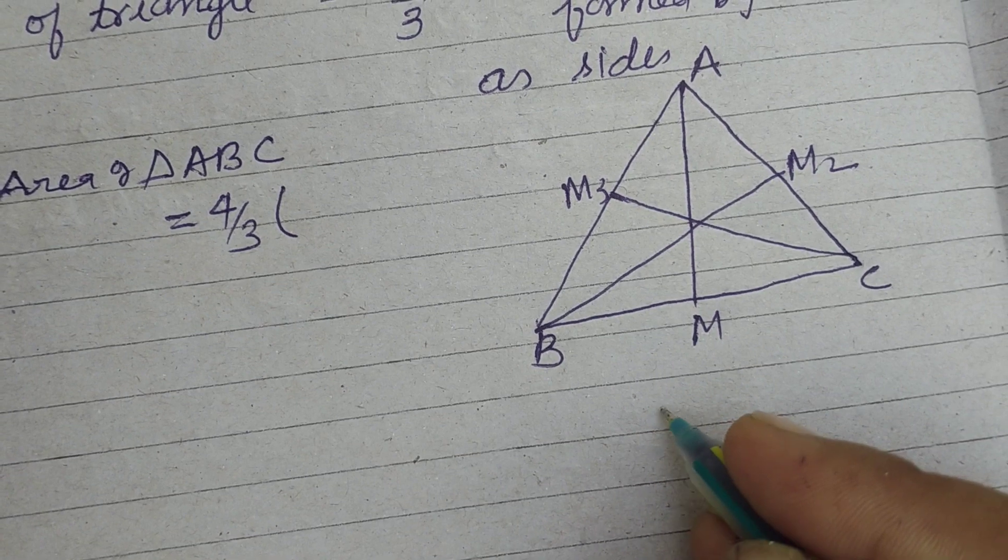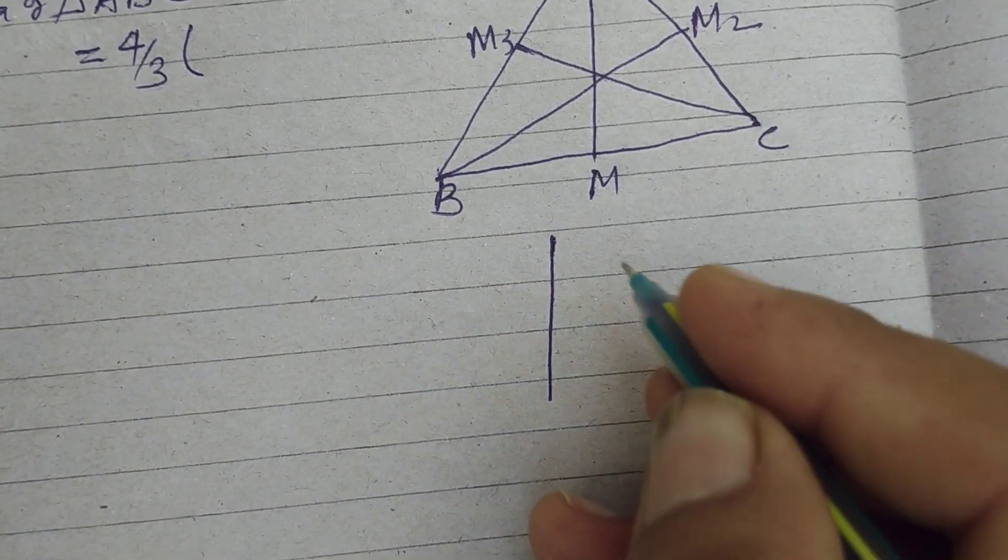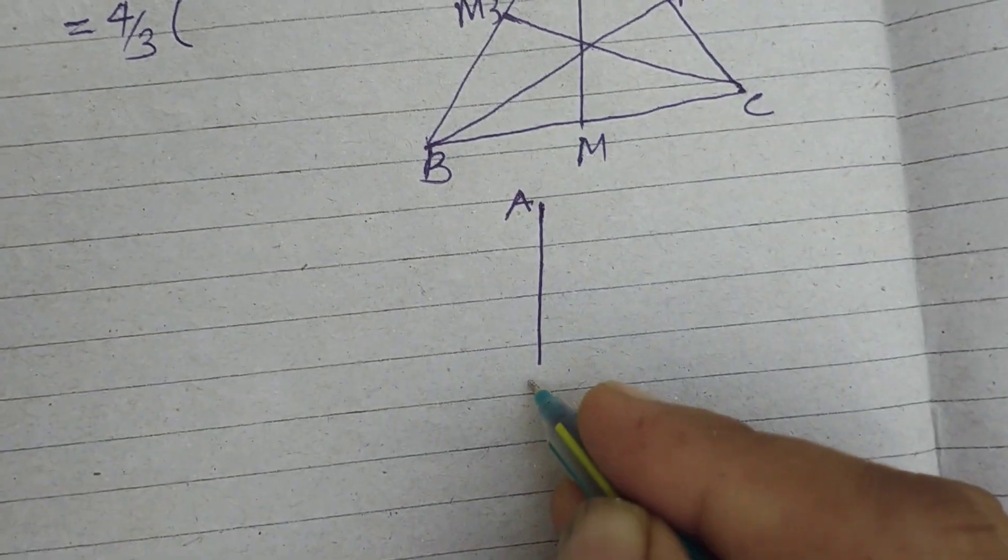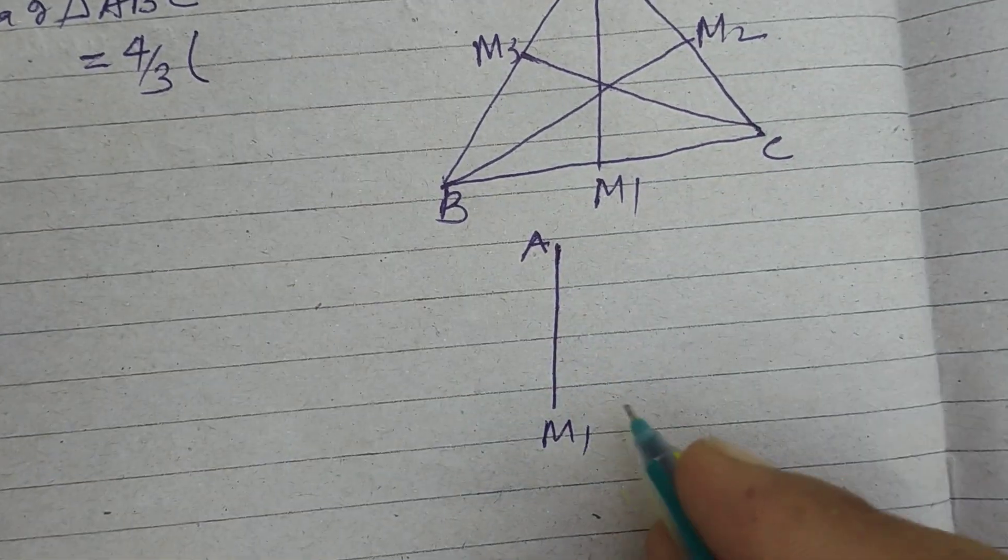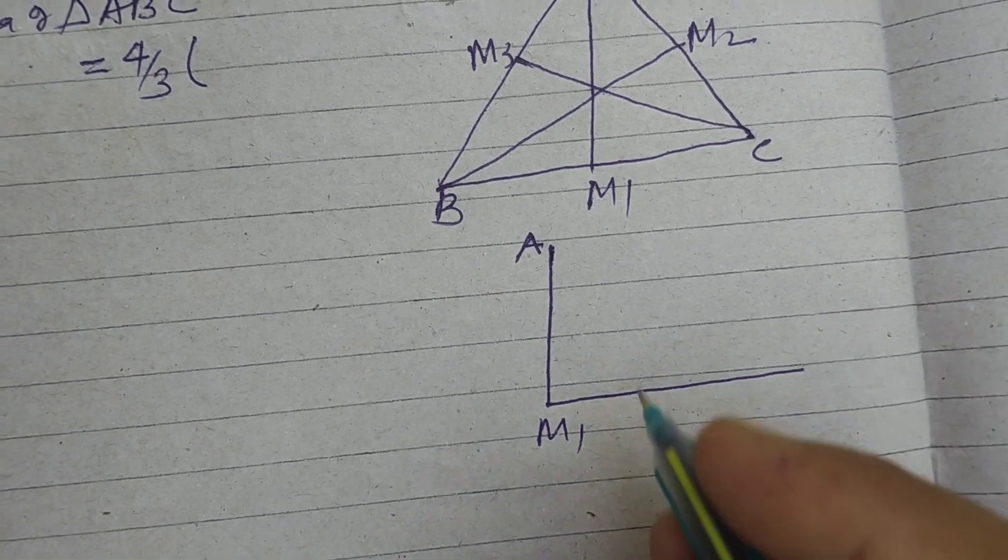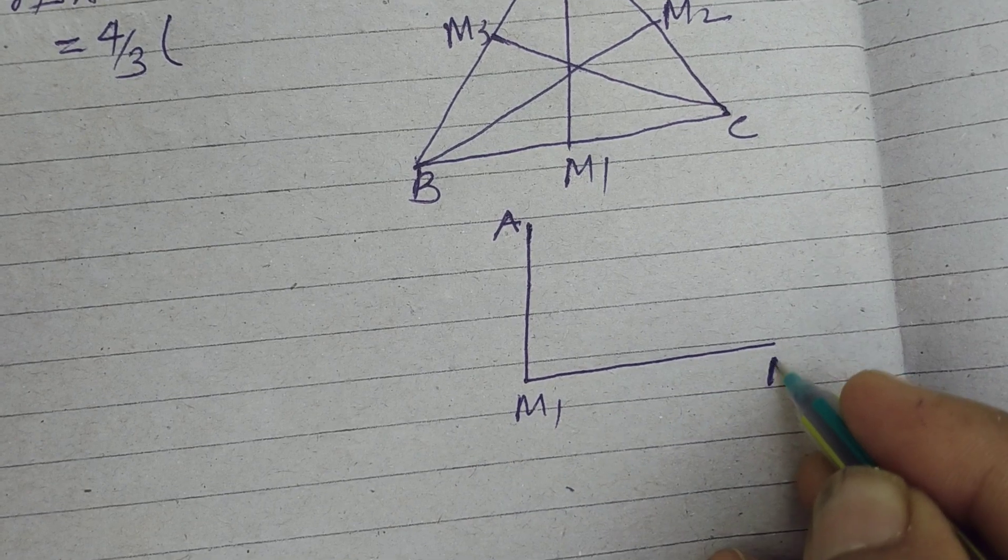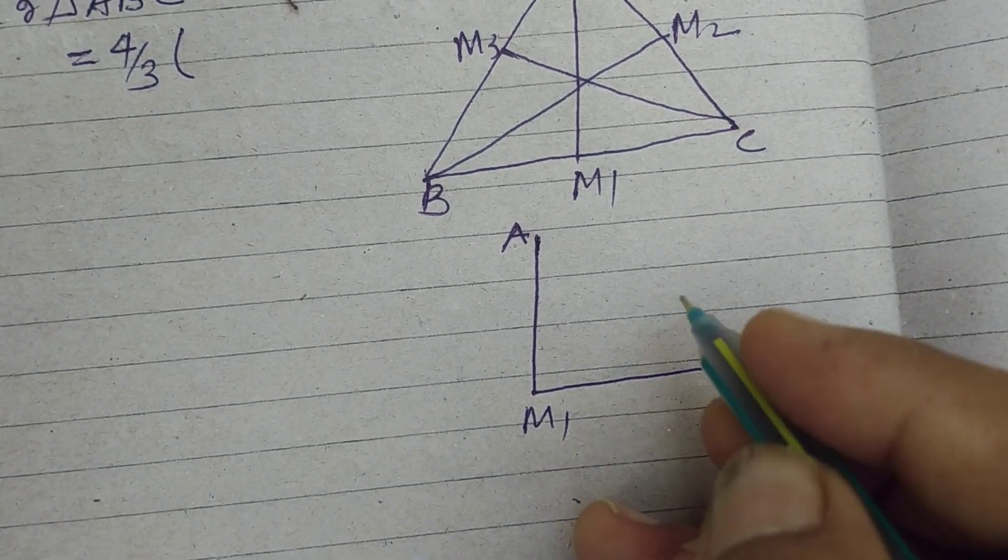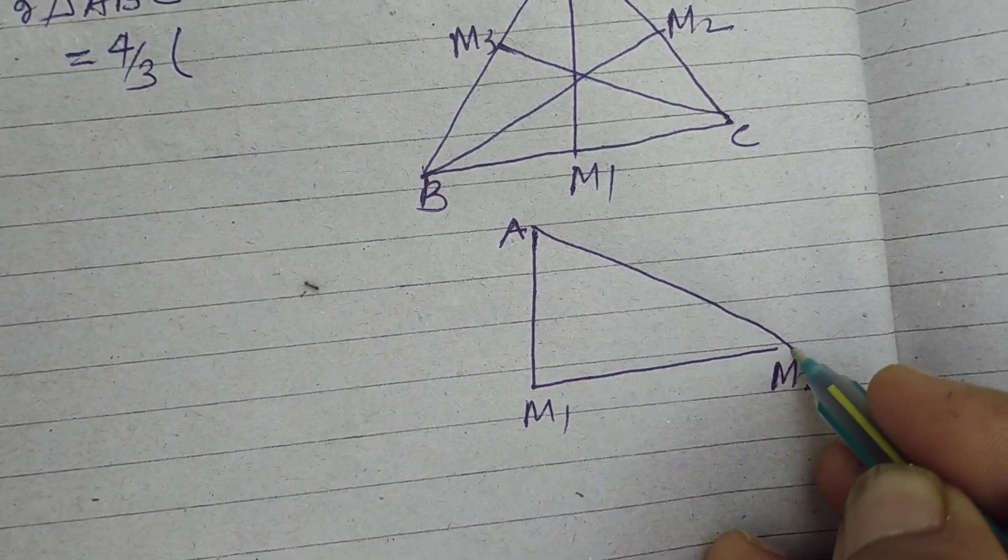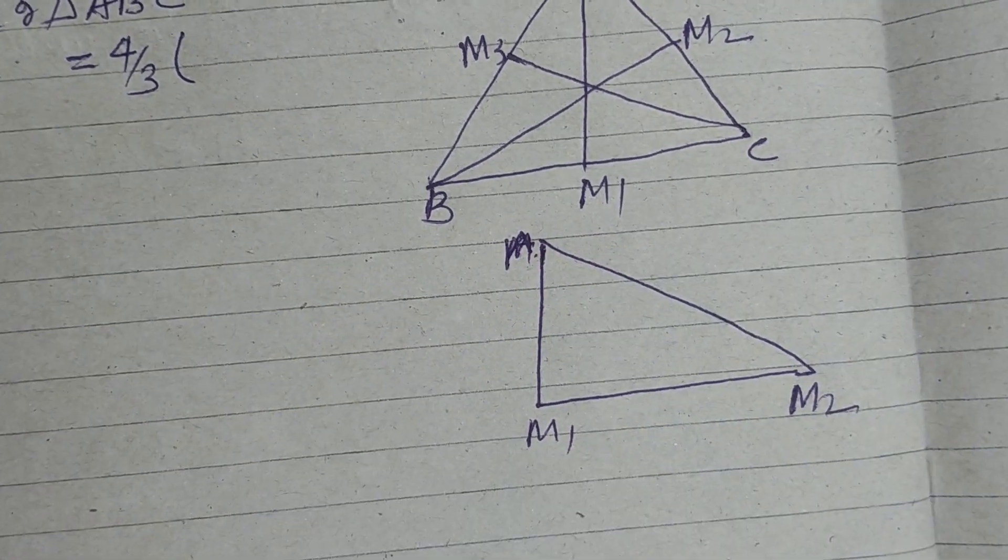So this is AM, we take AM1, this is BM2, so let this is M2 and this is M3. So M1, M2, M3.